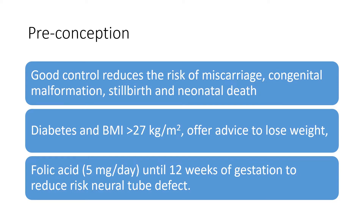Preconception. Good control reduces the risk of miscarriage, congenital malformation, stillbirth, and neonatal death. If a woman has diabetes and a BMI over 27, offer advice to lose weight before becoming pregnant. Advise patients to start folic acid 5 mg a day until 12 weeks of gestation to reduce the risk of neural tube defects — start as soon as pregnancy is planned. This is 5 mg a day, not the 400 mcg routinely recommended for everyone else.